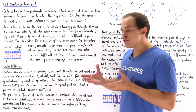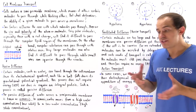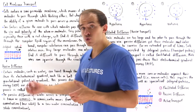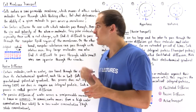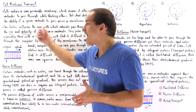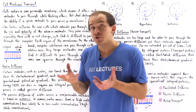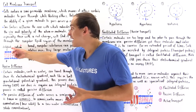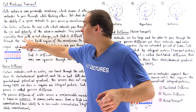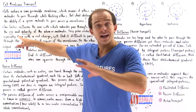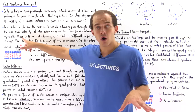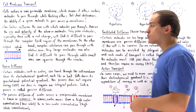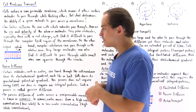The two things to consider when determining whether a molecule can cross the phospholipid bilayer are size and polarity, and we have to weigh them together. So even though cholesterol is large, because it has no charge and is essentially nonpolar, it will have no problem moving across the cell membrane.